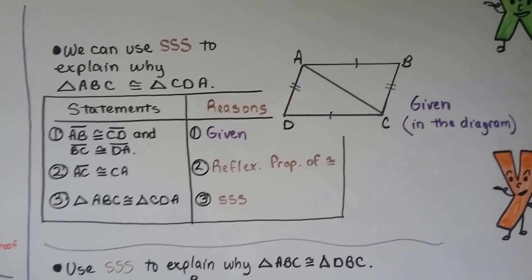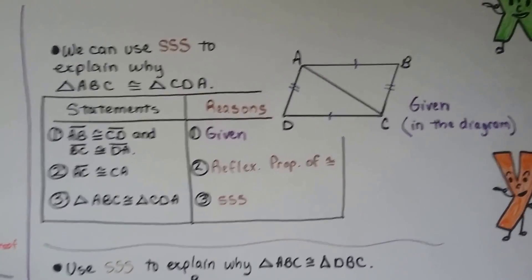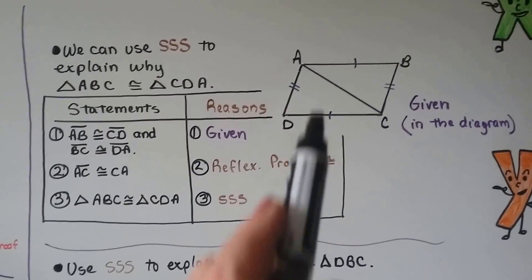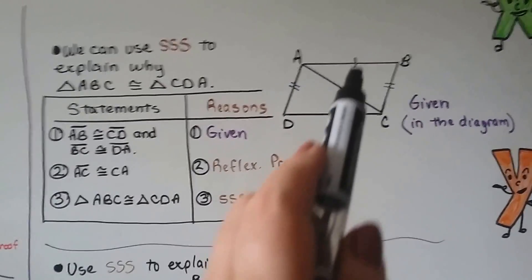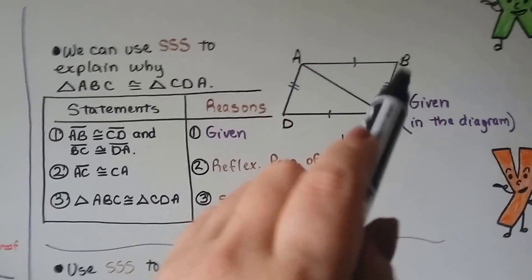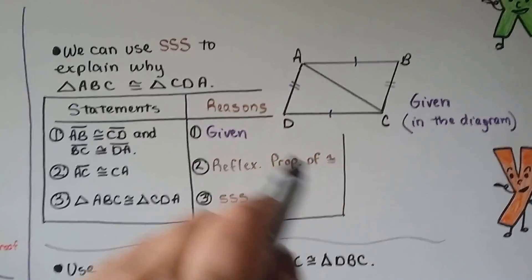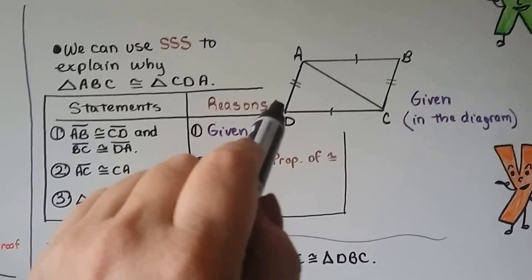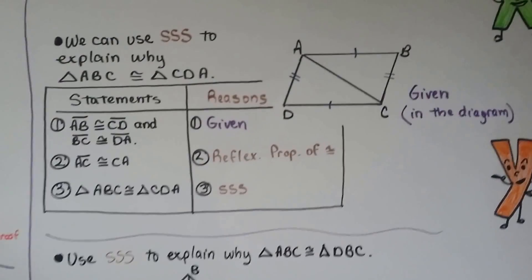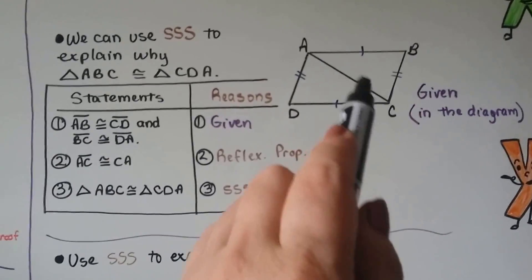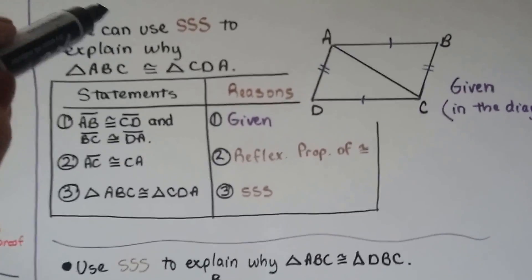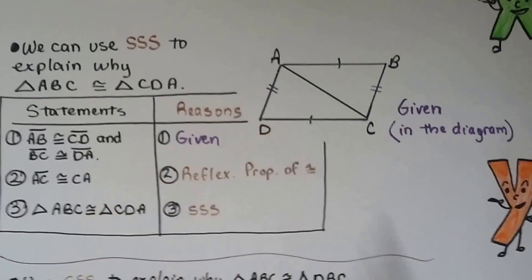Our statement from step 1 is that segment AB is congruent to segment CD — we see the congruent marks. And that BC is congruent to AD. Congruent marks. So that's given in the diagram. The given isn't always in words; it could be given in the diagram.